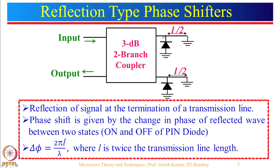Depending upon the chosen length we can get the desired phase delay. For example, if L equals lambda by 8, we will have a phase delay of pi by 4, which is about 45 degrees. By switching the PIN diode on and off we can get a differential phase shift given by this expression. This is a digital phase shifter. We can also realize an analog phase shifter here by replacing the PIN diode portions with a varactor diode — one varactor diode connected at each port with a common biasing voltage.